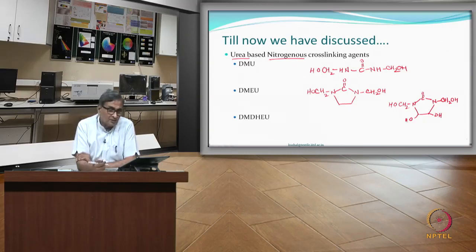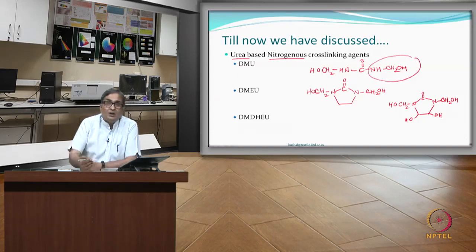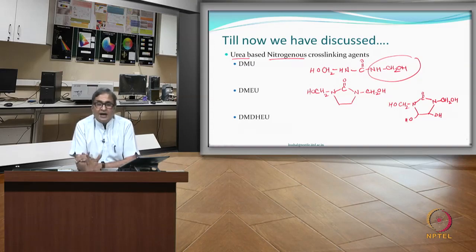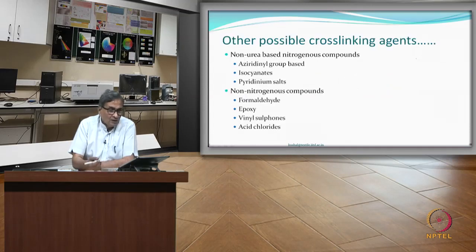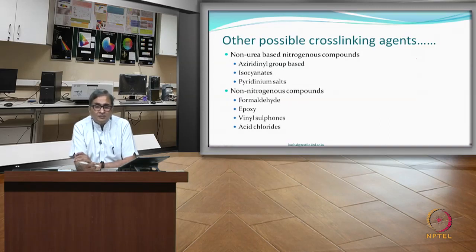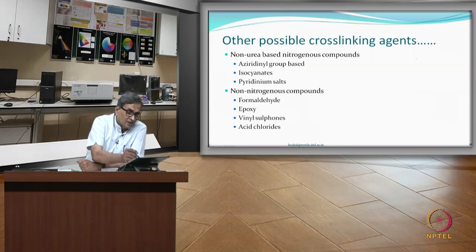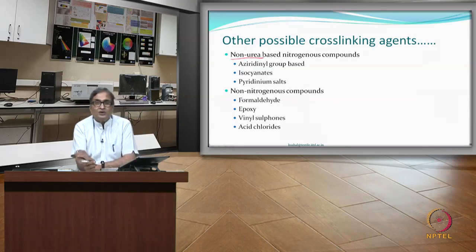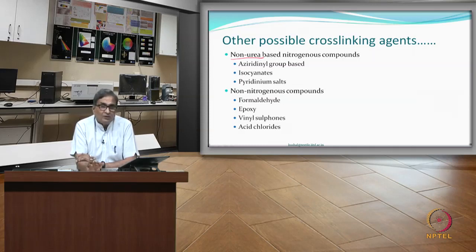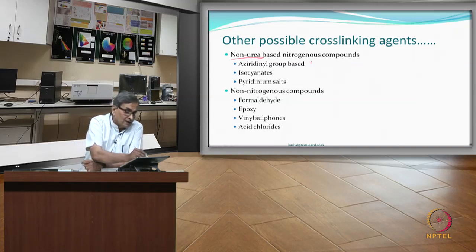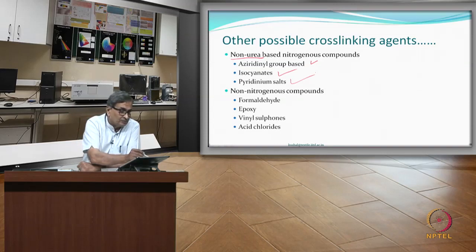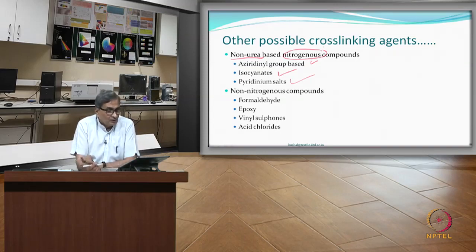Today we will look at another possibility where the N-methylol group is not the functional group. One category is non-urea-based nitrogenous compounds — they may contain nitrogen but are not urea-based. Examples include aziridine-group compounds, isocyanates, and pyridinium salts, all of which contain nitrogen but are not urea.